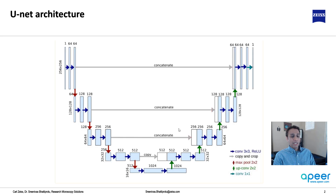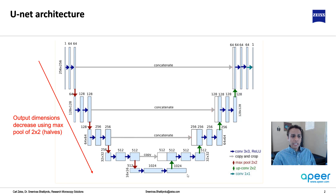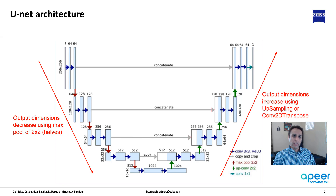Just to remind you again — in the U-Net we're talking about, you have an encoder path where the dimension size goes down as you go deeper. That's because when you apply the max pooling operation with size 2x2, that decreases the size of your image by half, so you're going from 256 to 128 to 64 to 32 to 16. On the decoder side we need to do exactly the opposite — go from 16 to 32 and so on — and this is where we apply UpSampling2D or Conv2DTranspose.